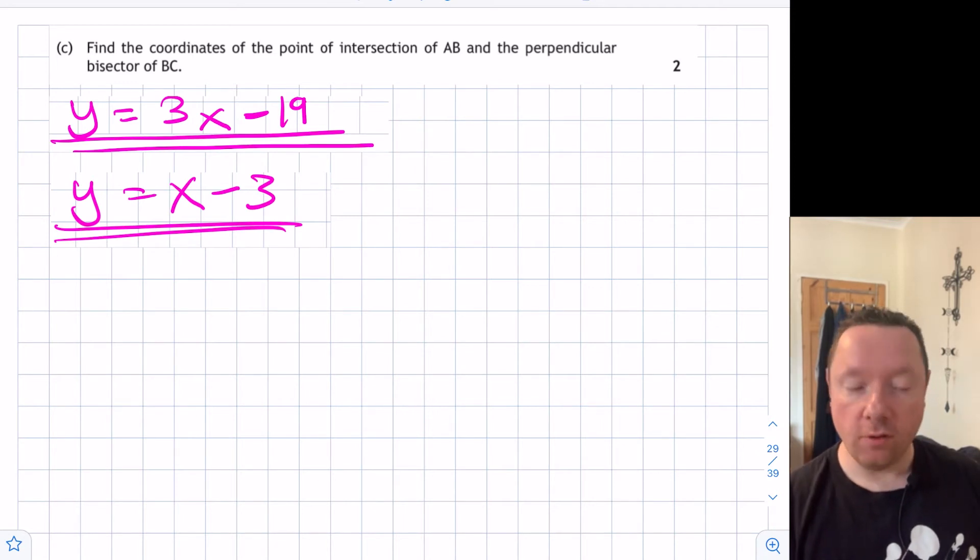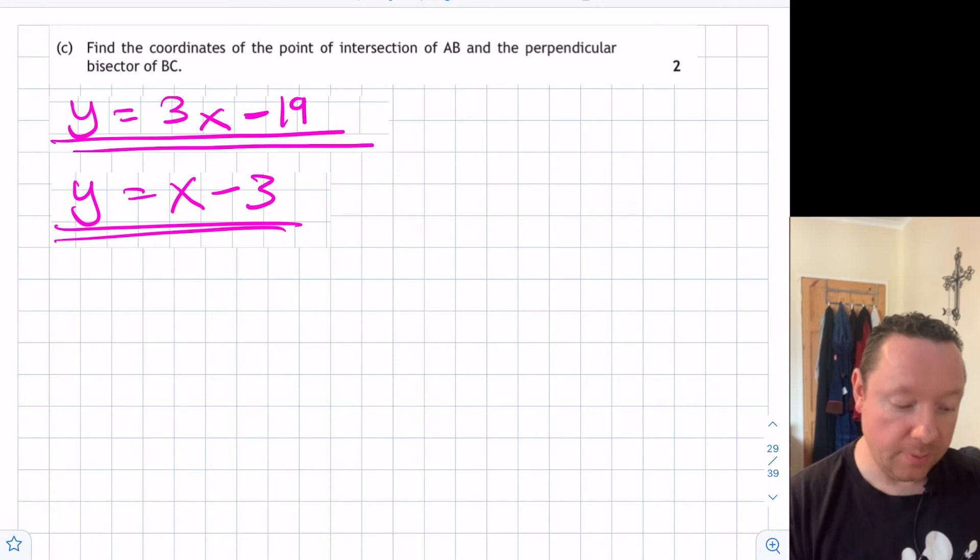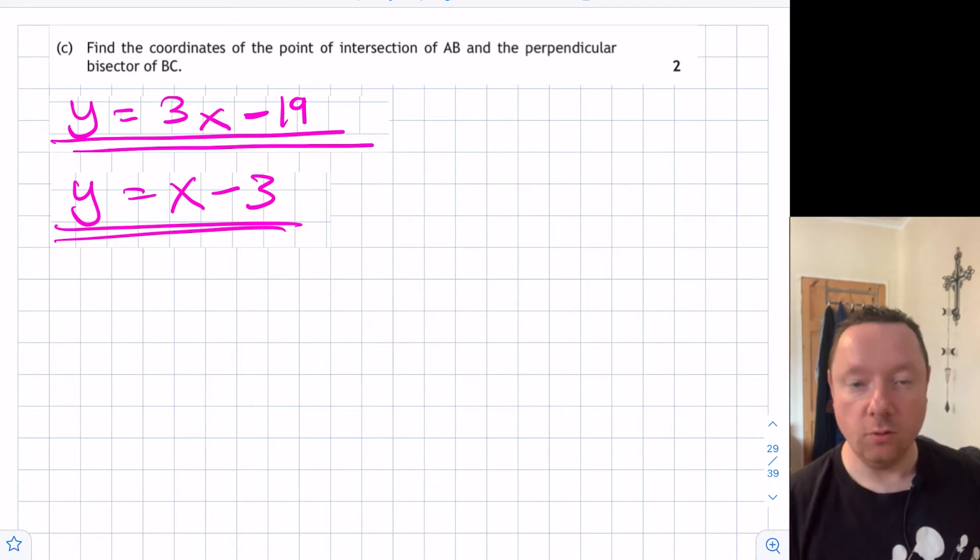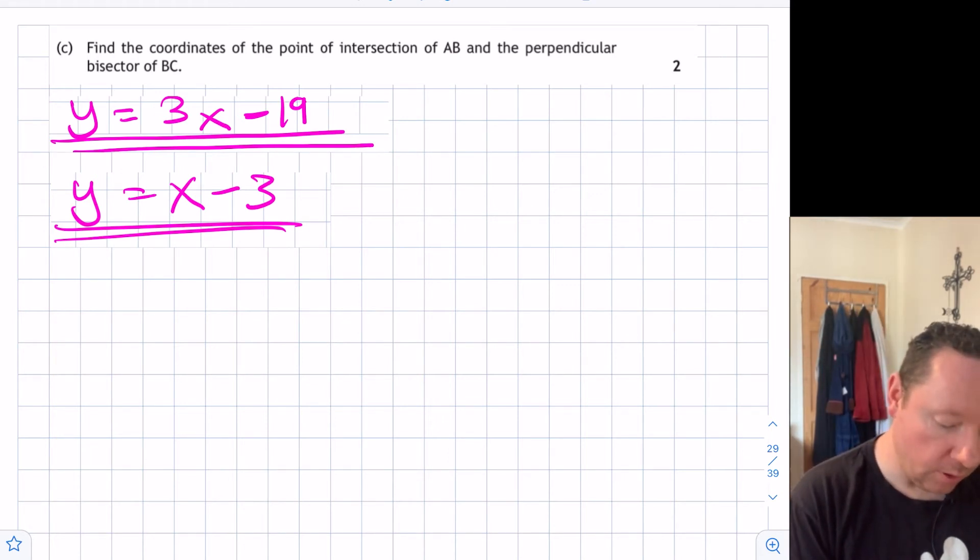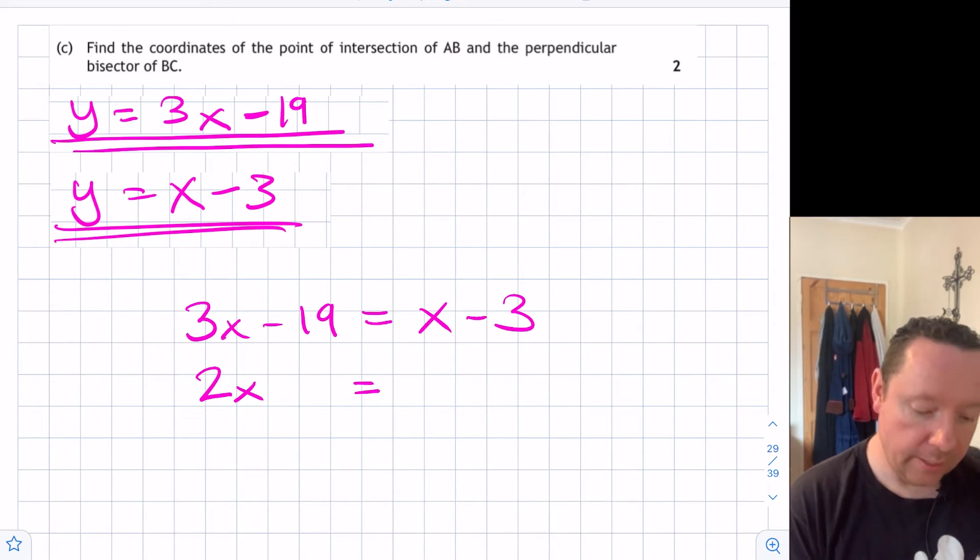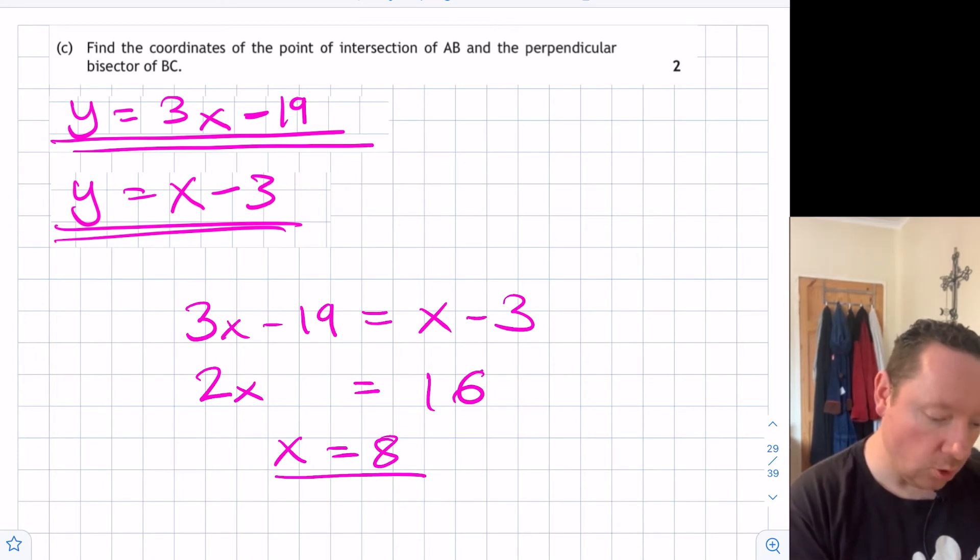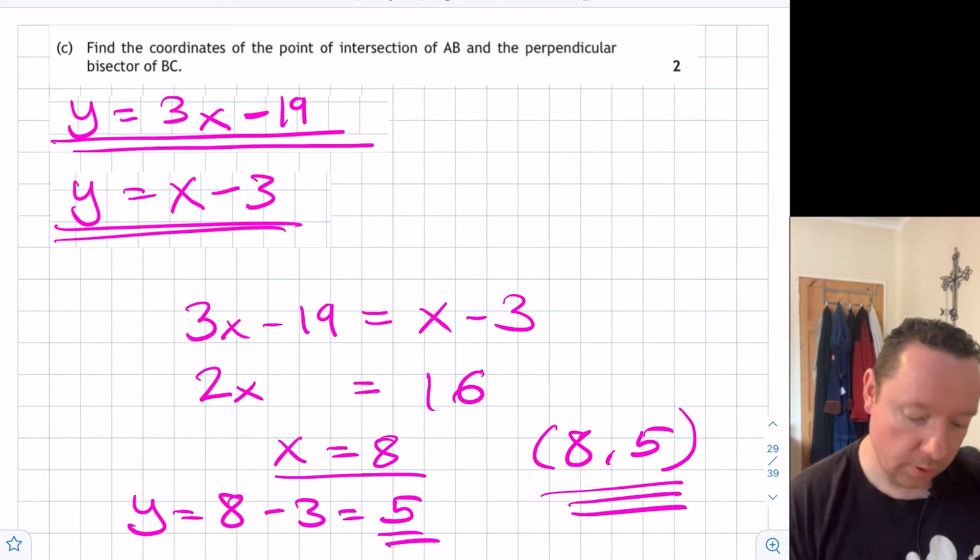Part C says find the coordinates of the point of intersection of AB and the perpendicular bisector of BC. These are our two equations: y equals 3x minus 19 and y equals x minus 3. Notice they both say y equals. So if both say y equals, we can make the right-hand sides equal to each other. Alternatively we could take away the two equations. I'm going to do it this way because it's simpler. If I write 3x minus 19 equals x minus 3, taking the x across you get 2x equals 16, so x equals 8. We've got an x, now we need a y. Our easiest y equation is the bottom one, so y equals 8 take away 3, which is 5. Our answer is (8,5). We're done.